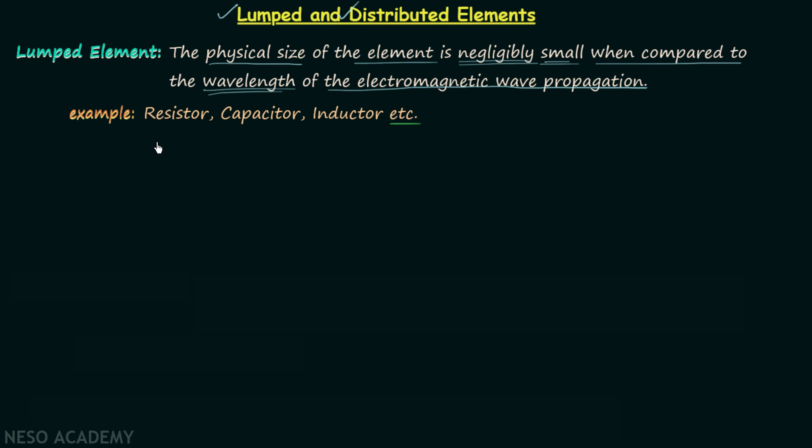Now we will try to understand why resistor, capacitor, inductor and other such elements are lumped elements. For this we will calculate the wavelength of the electromagnetic wave propagation. We know the velocity is equal to lambda multiplied by f, where v is the velocity. The velocity of electromagnetic wave in vacuum is equal to the speed of light, therefore v will be equal to 3 × 10^8 meters per second.